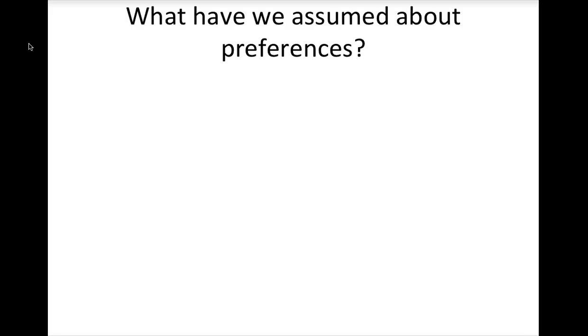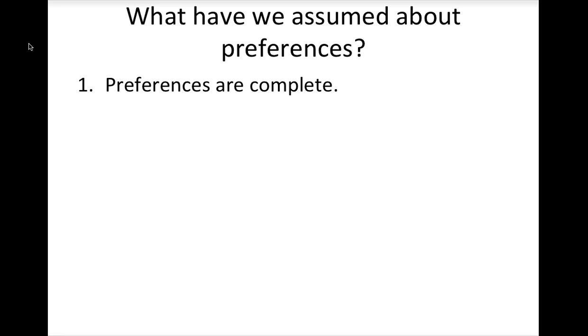Last time, we developed a model of consumer preferences. Let's review the assumptions that we made in order to develop a reasonable model. First, we assume that preferences are complete, which means that a consumer is able to come to a decision about how she likes or doesn't like any pair of bundles.